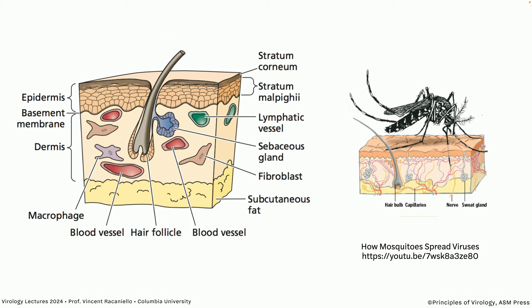Mosquitoes spread viruses by probing for a capillary with their proboscis. The female looks for a blood meal and will probe continuously until finding a capillary. Anticoagulants and anesthetics come out of the proboscis — that's why you don't feel the bite immediately. At the same time, viruses come out as well. So the mosquito breaches the skin, goes down into the sub-epidermal dermis, and injects virus directly into the bloodstream.